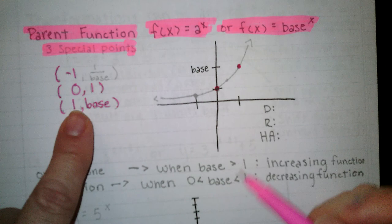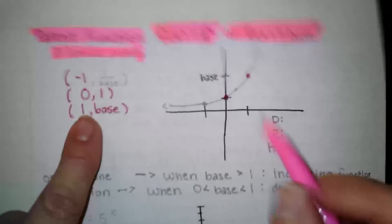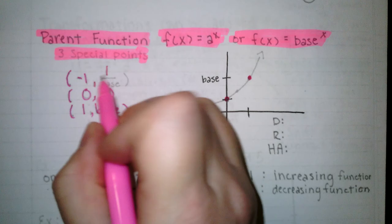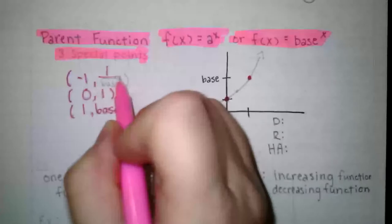And then if I put negative 1 in for x, then I'll have base to the negative 1 power. That negative 1 is going to cause the base to be moved into the denominator. So it will be negative 1, 1 over base. So like if our base was 3, then this ordered pair would be negative 1, 1 third.